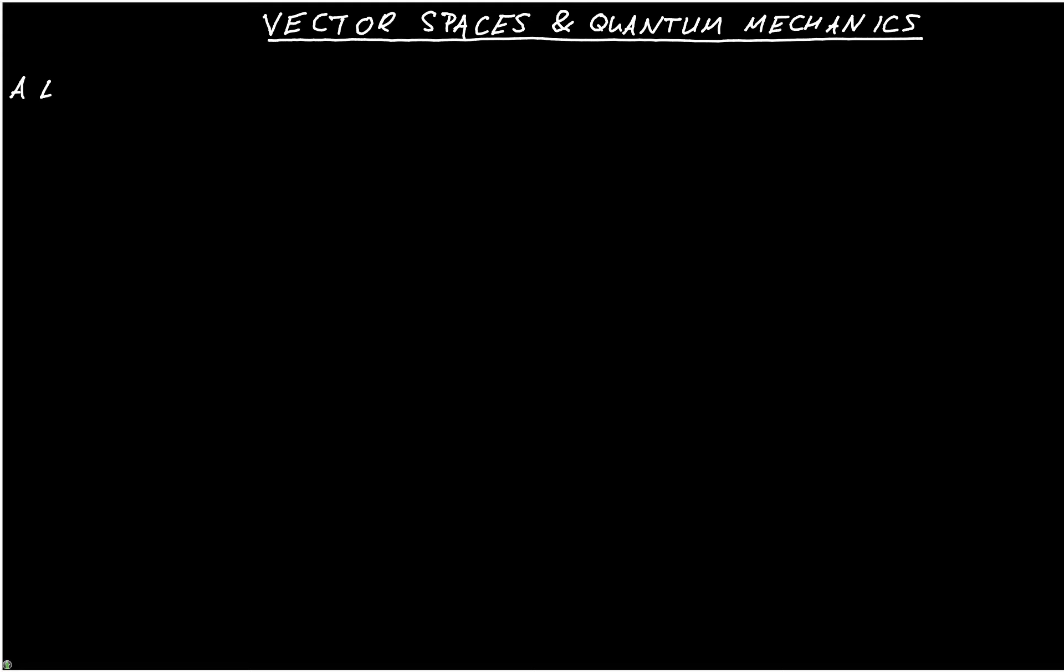So a linear vector space consists of a set of vectors and some rules which allow you to combine them. We'll call these vectors Psi1, Psi2, Psi3, etc. And a set of rules.